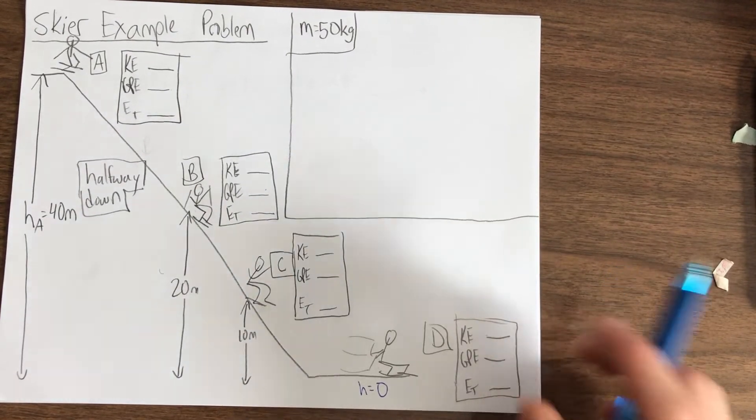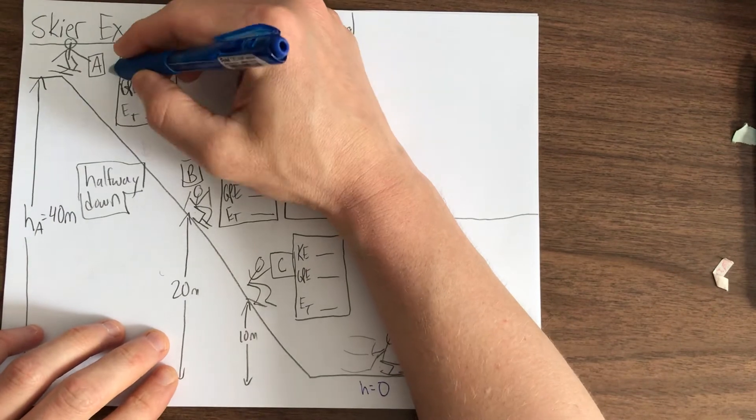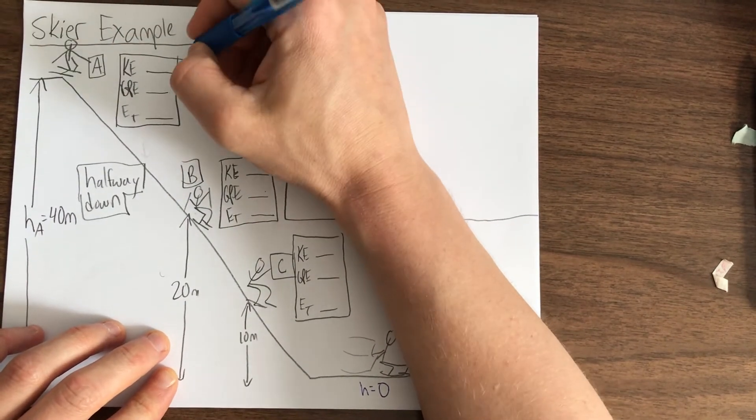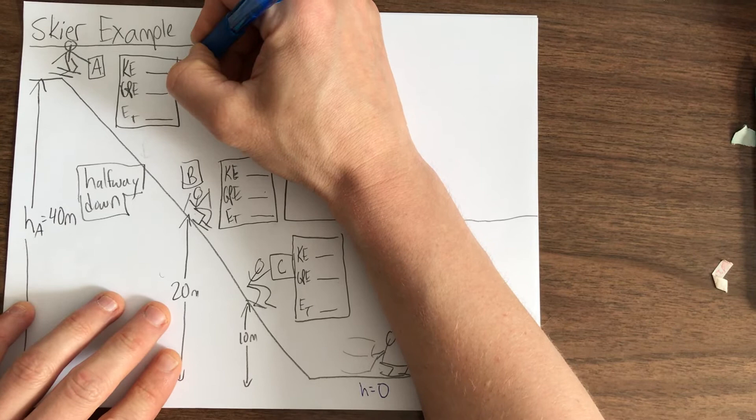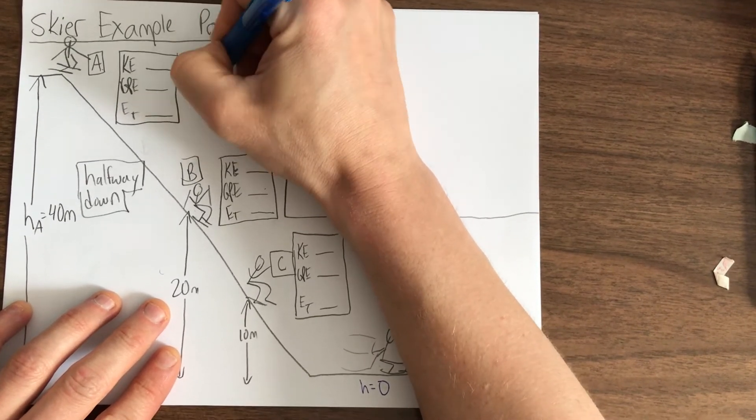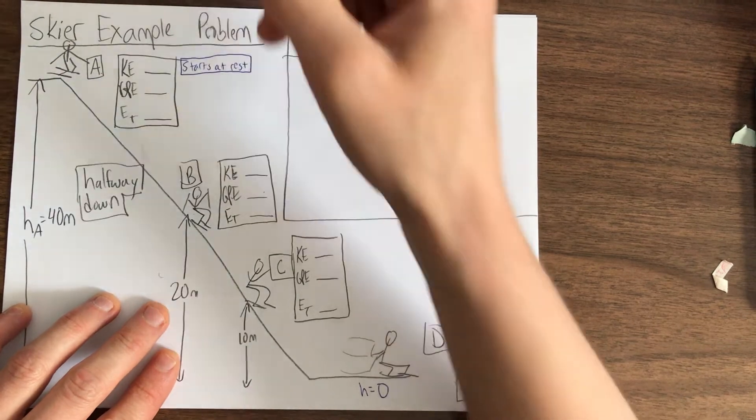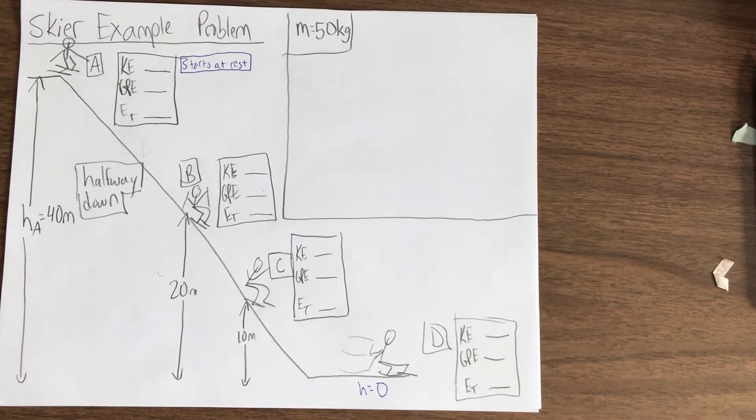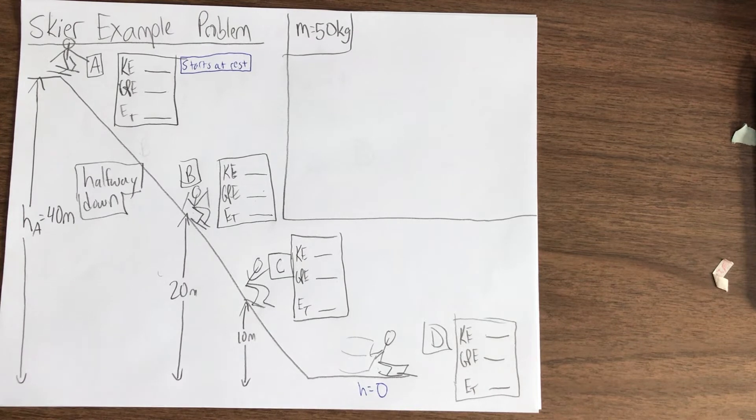So, one last thing we should write down is for position A, we should write down that the skier starts at rest. Alright, so they don't have any speed in the beginning of the problem, they only gain the speed as they go down the hill.